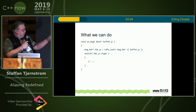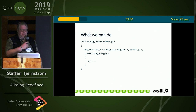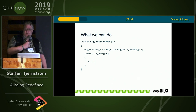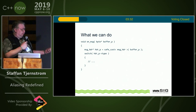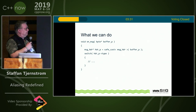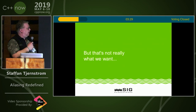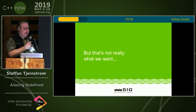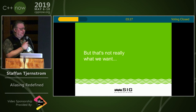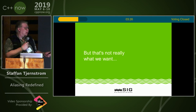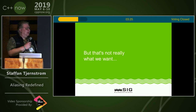So we can produce code that doesn't read too badly, and at least for us doesn't blow up or do something strange. But that code isn't really what we want — it has problems.